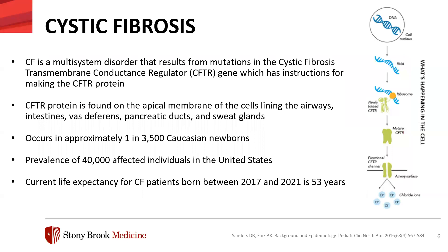Cystic fibrosis is a multi-system disorder that results from mutations in the cystic fibrosis transmembrane conductance regulator, the CFTR. It's a gene with instructions for making the CFTR protein, which is made of 1,480 amino acids. Normal CFTR production involves DNA in the nucleus providing instructions, RNA acting as the template for transcription, ribosomes performing translation, and the CFTR protein moving to the cell surface to function as a chloride channel, maintaining the right balance of fluid in the airways. Around a decade ago, patients with cystic fibrosis had a life expectancy of 38, but currently the life expectancy is 53 years old.